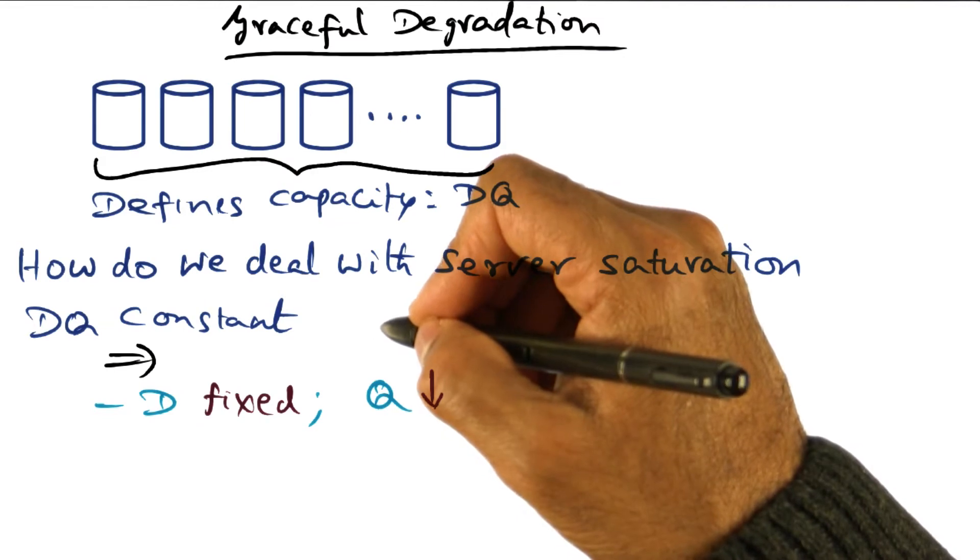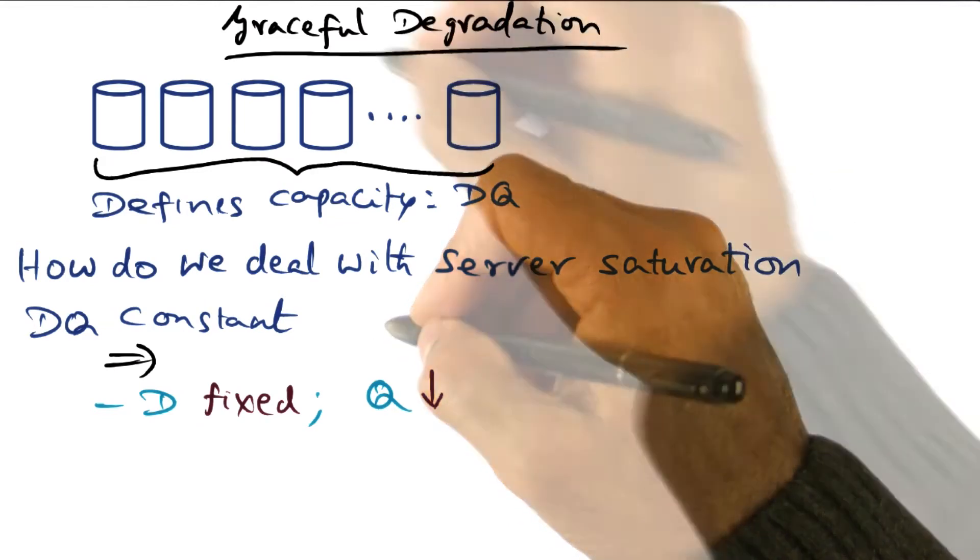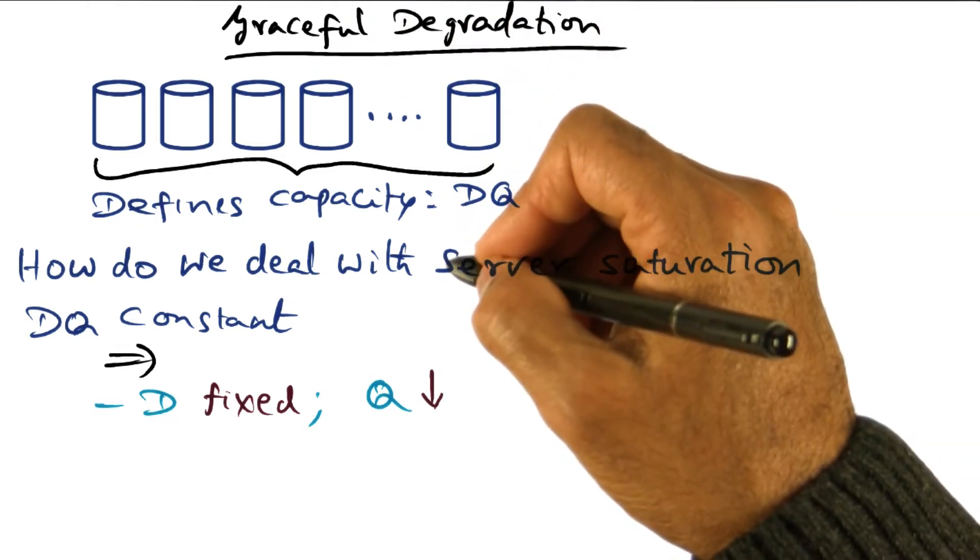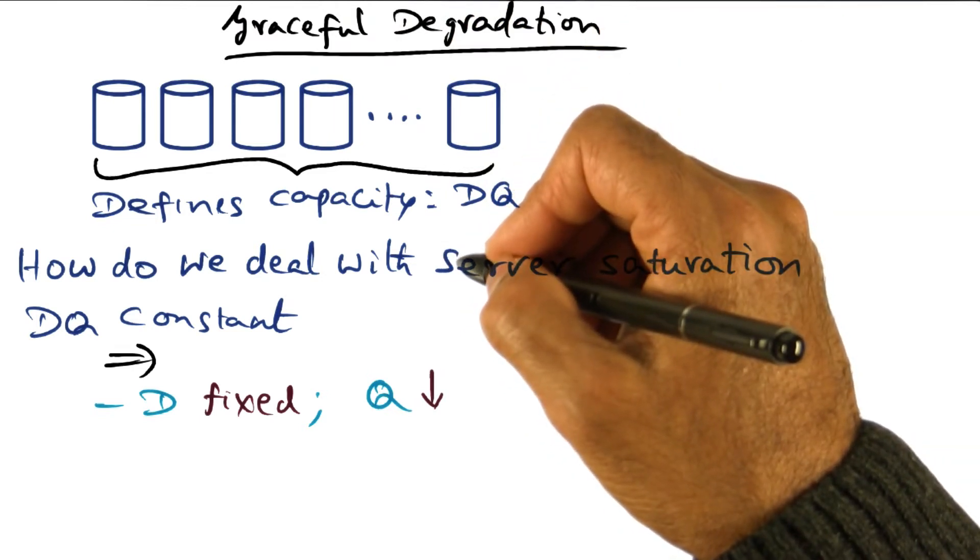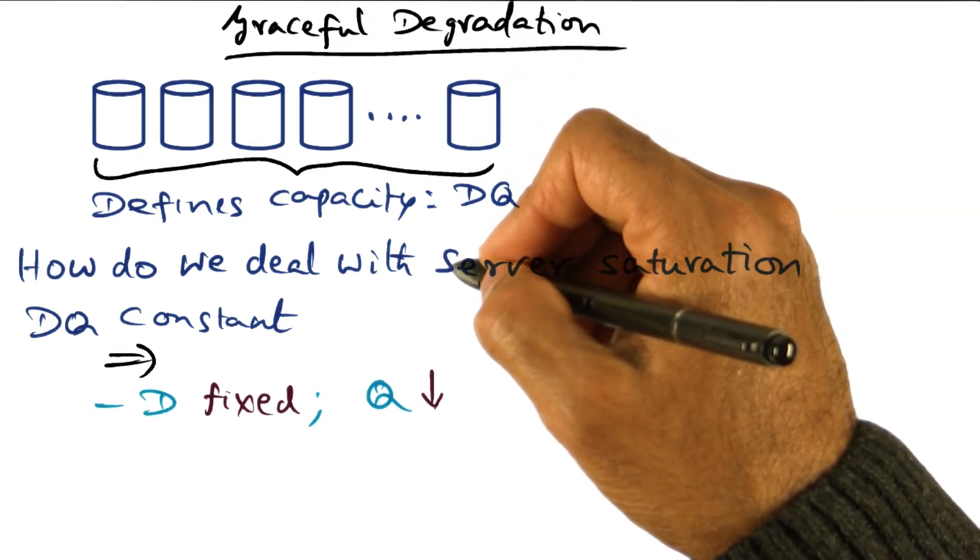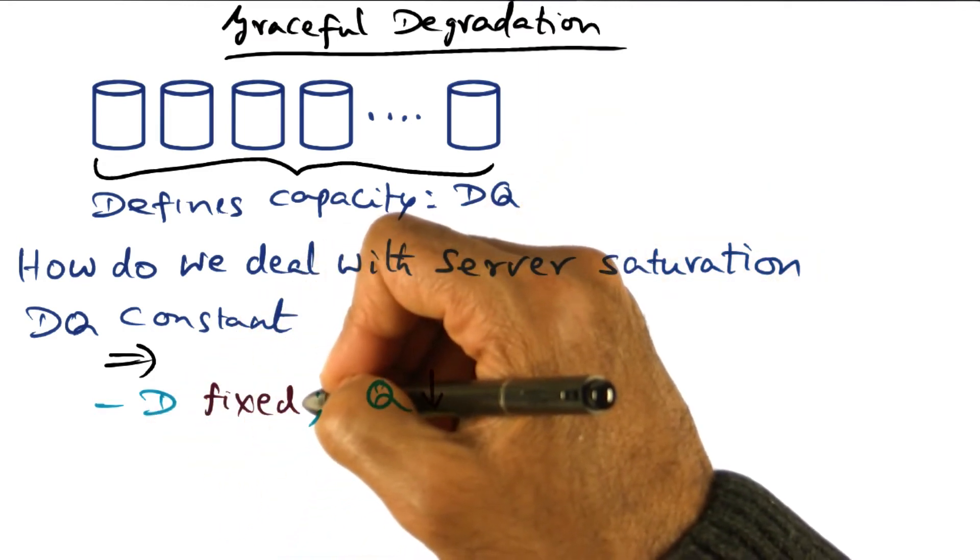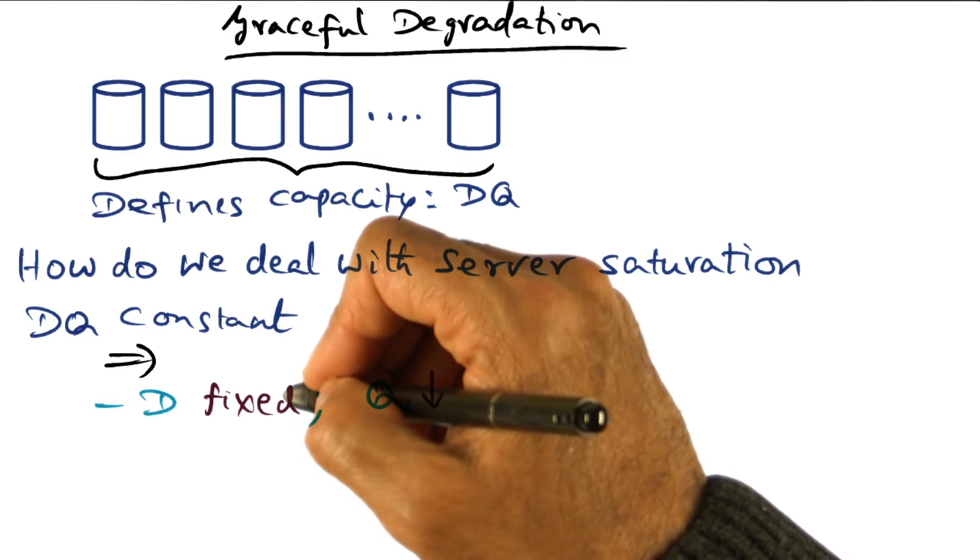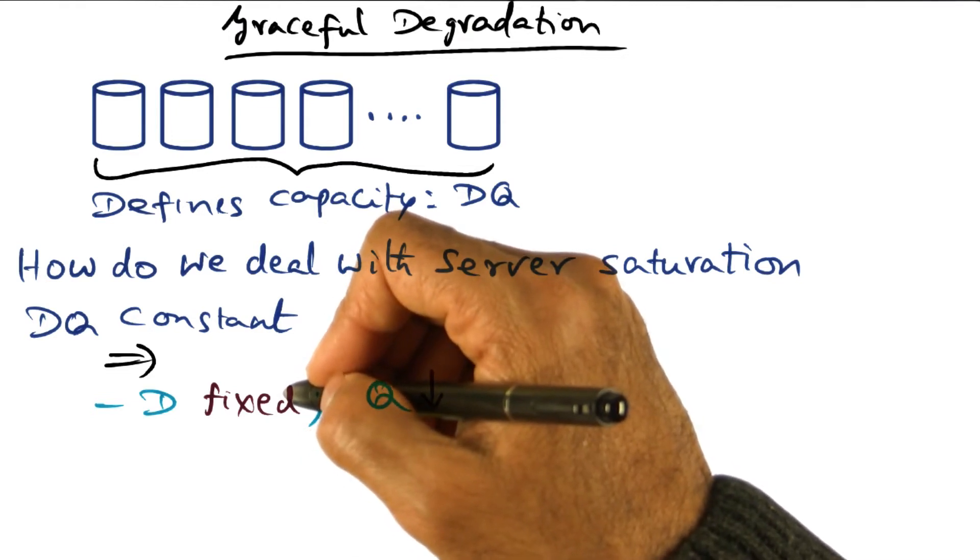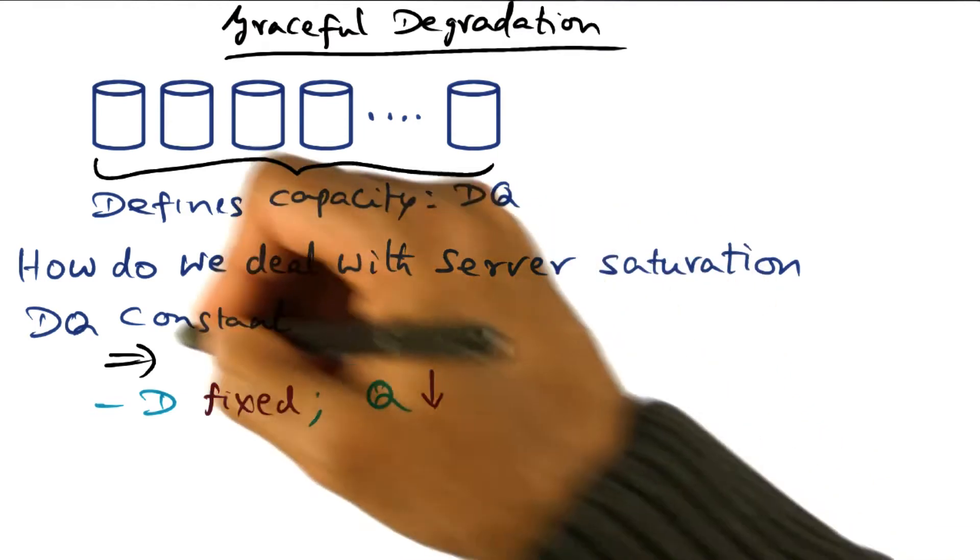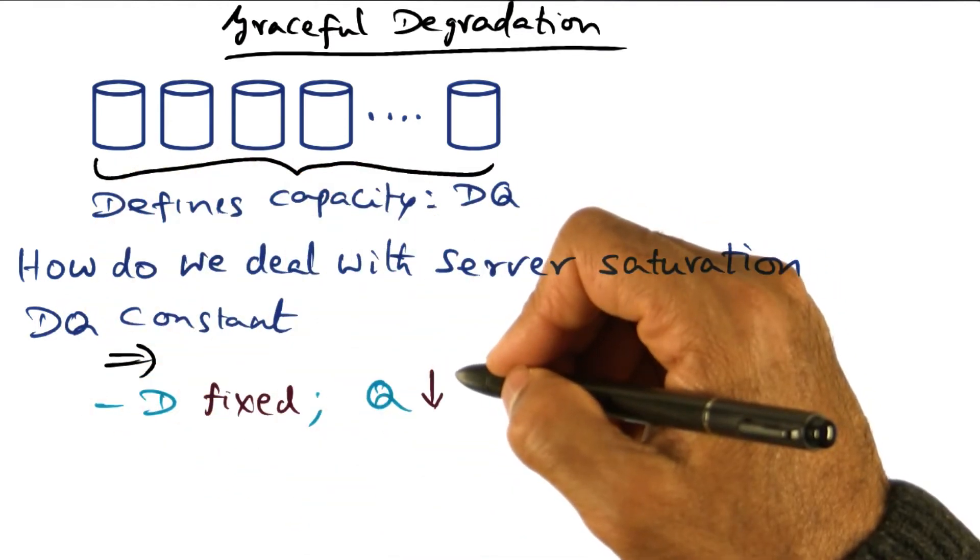That's a constant. DQ is a constant, and so if you reach that limit, then we have a choice of gracefully degrading the service from the point of view of the client. One possibility is we keep the harvest the same, meaning that every client request that comes in has complete fidelity in terms of the answers returned by the server. So D is fixed, Q comes down because DQ is a constant. That's one option.